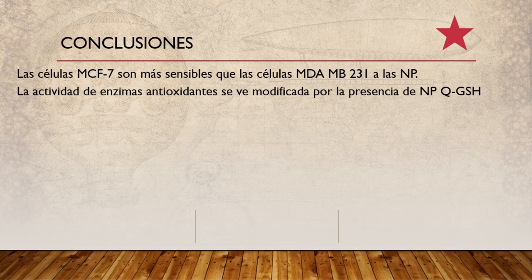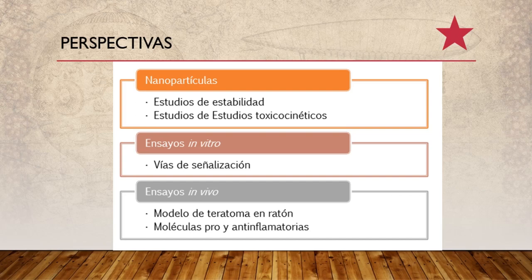Como conclusiones, las células MCF7 mostraron mayor sensibilidad a la exposición de nanopartículas que las células MDA231, lo cual puede deberse a las propiedades propias de cada línea celular. La actividad de enzimas antioxidantes se ve modificada por la presencia de nanopartículas de quitosán con glutatión, potenciada en algunos casos por la exposición combinada con doxorrubicina, lo cual podría ser útil dado los eventos celulares como apoptosis y proliferación celular. Como perspectivas, se plantean estudios de estabilidad, toxicocinética, determinación de vías de señalización, y un modelo de teratoma en ratón para evaluar células pro y antiinflamatorias.